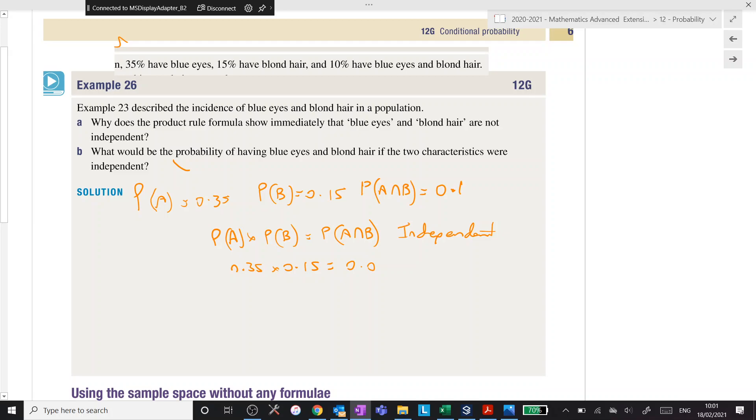Yeah, then we'll round up. 0.053, which does not equal 0.1, therefore not independent. Not independent. We happy with that?